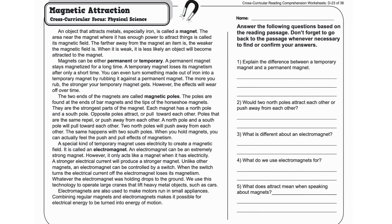The area near the magnet where it has enough power to attract things is called its magnetic field. The farther away from the magnet an item is, the weaker the magnetic field is. When it is weak, it is less likely an object will become attracted to the magnet.